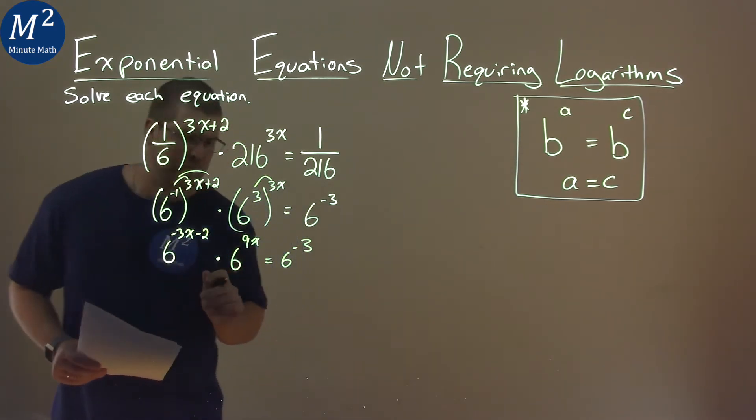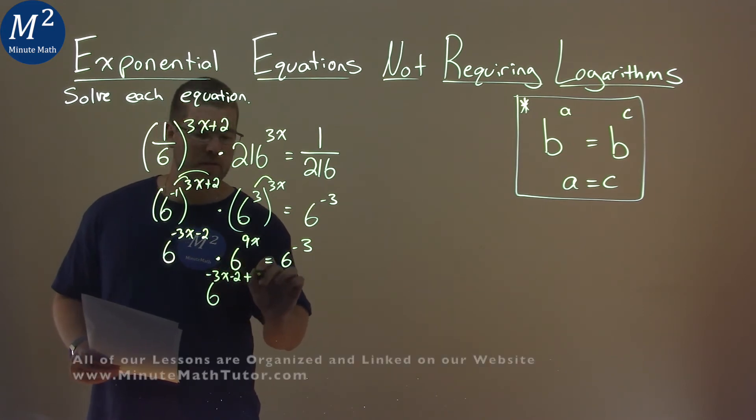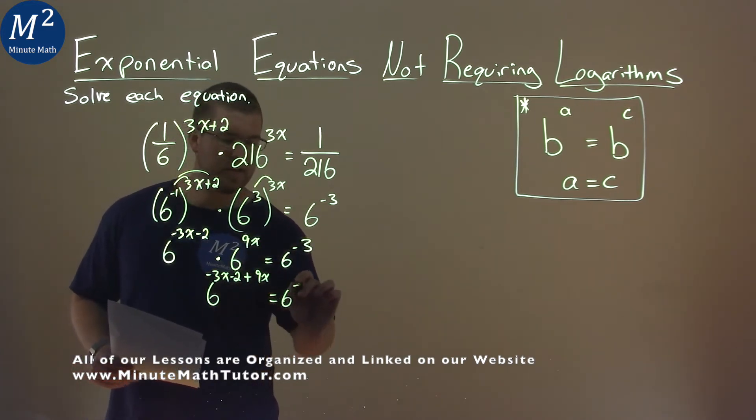Our rules also state that when we have multiplication of the same base, we add the exponents and we can keep the same base here of 6. So negative 3x minus 2 plus 9x is the whole exponent here for the 6, and that's equal to 6 to the negative 3.